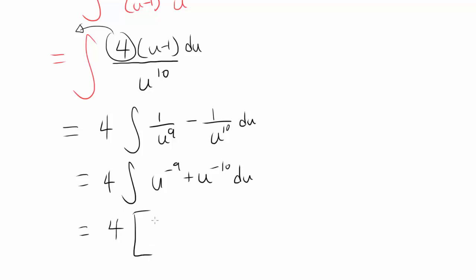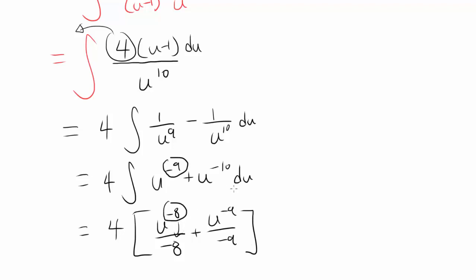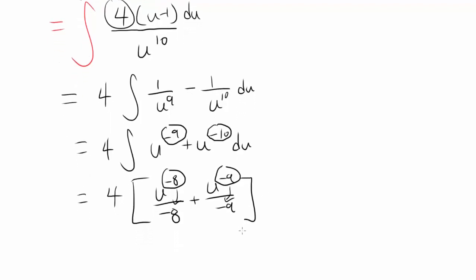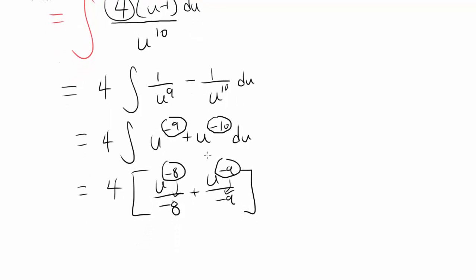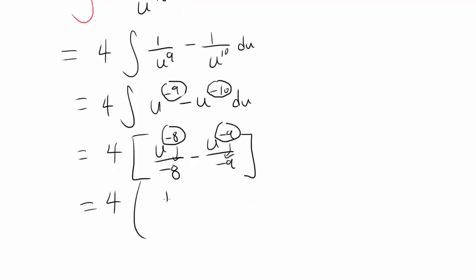This thing we can integrate. That's 4 times the integral of u to the negative 9th power minus u to the negative 10th power du. That gets us u to the negative 8 divided by negative 8, minus u to the negative 9 divided by negative 9. You add 1 to negative 9 to get negative 8 and divide by the same thing; add 1 to negative 10 to get negative 9 and divide by the same thing. And that's minus, not plus — I just realized that, so let's keep it minus. So that's 4 times 1 over negative 8 u to the 8th, and with two negatives, plus 1 over 9 u to the 9th.